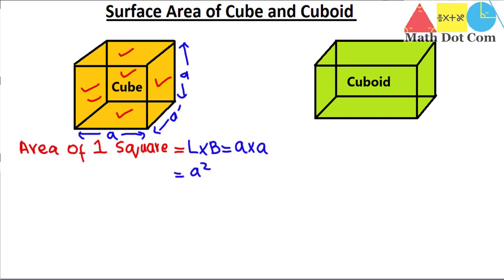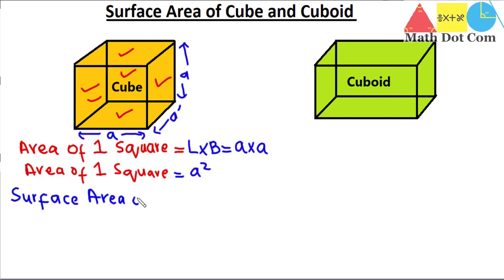The area of one square face of the cube is a². Since the surface area includes the sum of all faces, and there are six faces, the surface area of cube = 6a². The six comes from the six faces, and a² is the area of each 2D square face. Use this formula whenever you need the surface area of any cube.